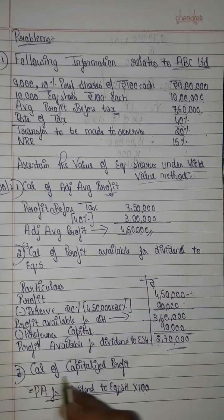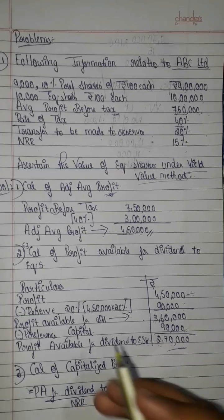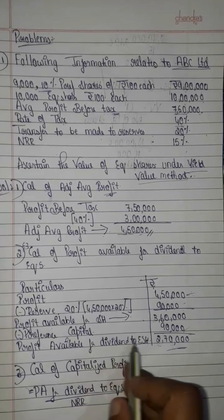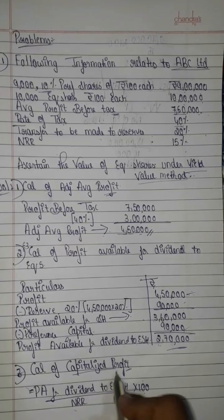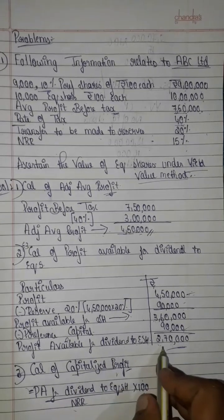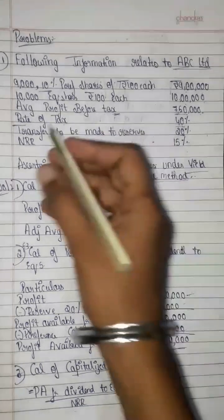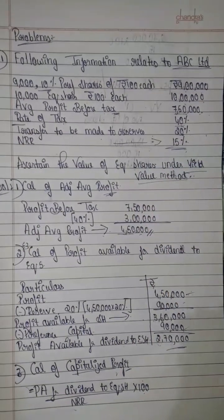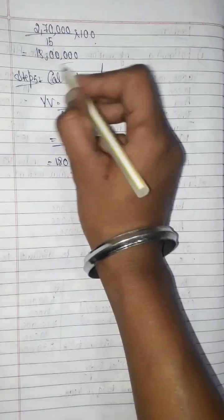Next is step 4: Calculation of capitalized profit. The formula is profit available for dividend to equity shareholders divided by NRR, multiplied by 100. That is 2,70,000 divided by 15% multiplied by 100, giving a capitalized profit of 18,00,000.